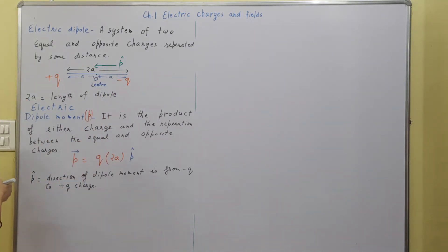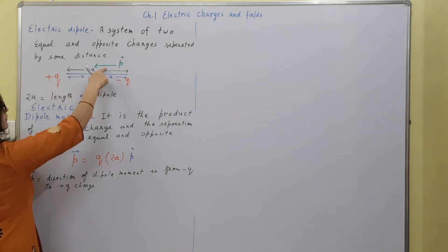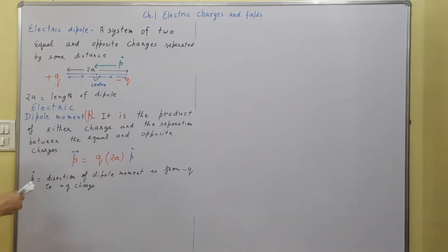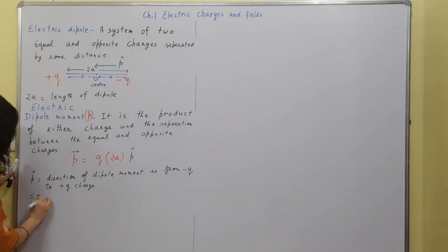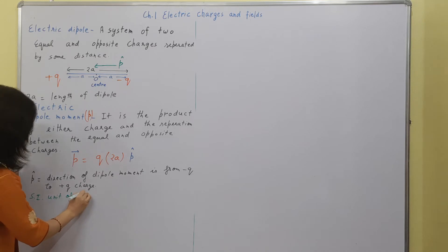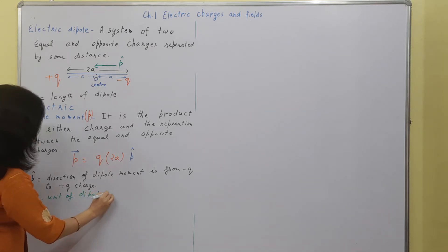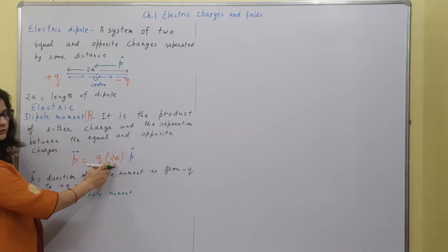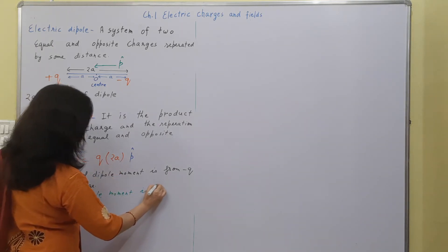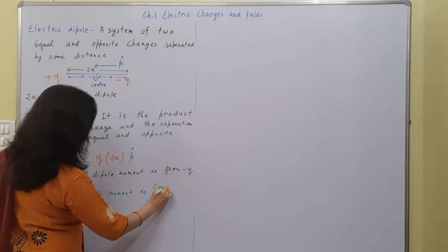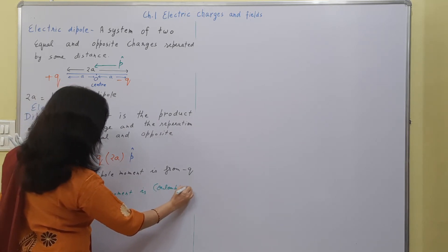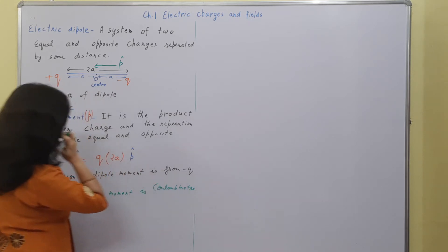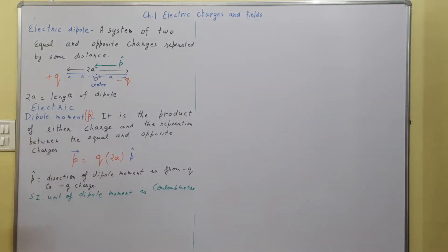This is a very important thing — the direction of the dipole moment is from minus q to plus q charge. The SI unit of dipole moment is coulomb into meter, because this is the product of either charge and the separation between the charges.